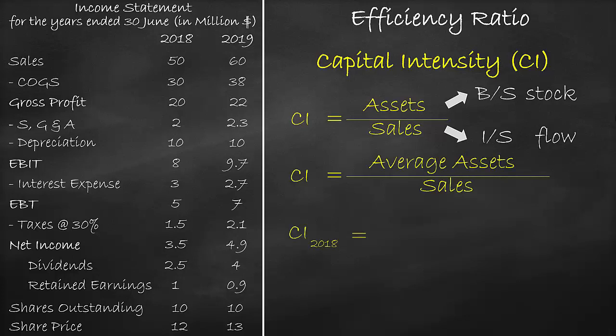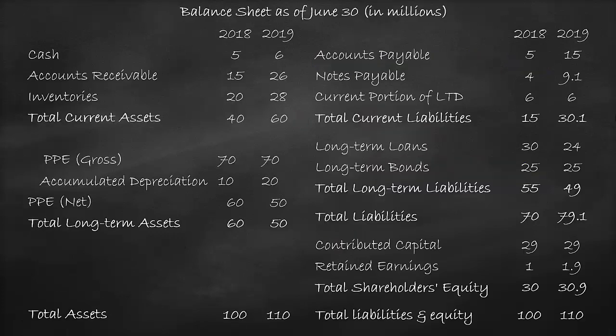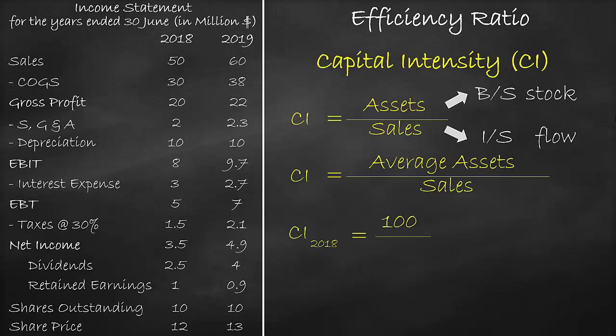To find the average assets, let's look at the balance sheet. Please note that 2018 is the first year of operations. Consequently, we cannot get the average assets as we do not have the previous year. We have assets in the year 2018 of $100 million divided by sales of $50 million, which is equal to two times.